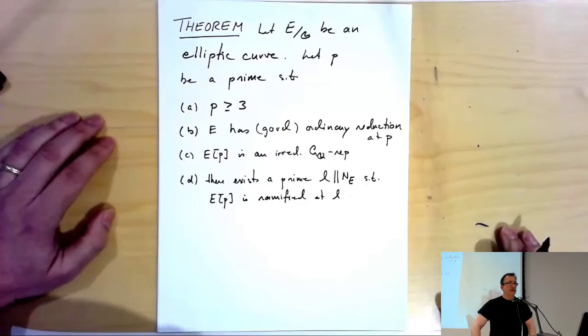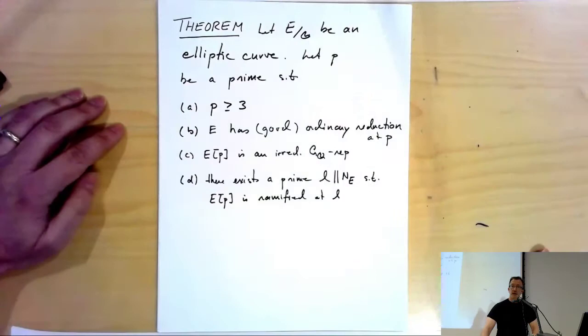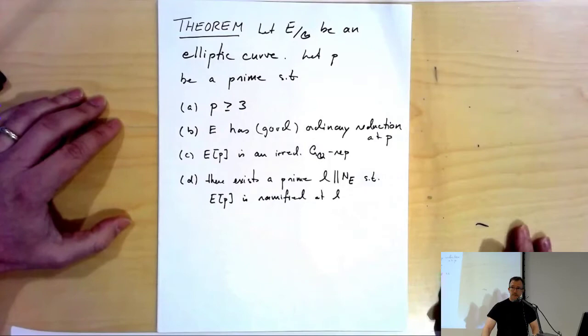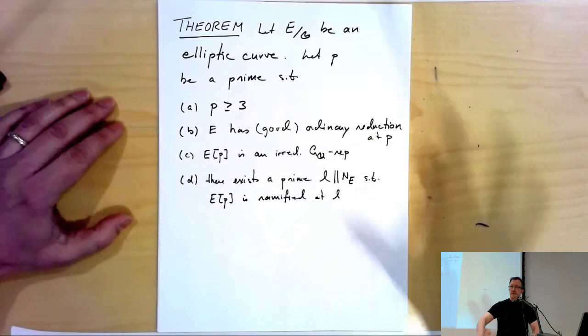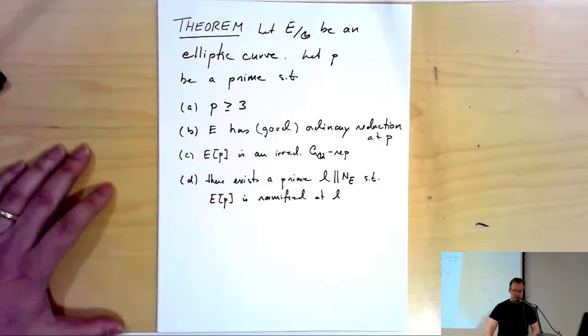This can be stated in a very clean way in terms of a minimal model for the elliptic curve at the prime l. If I take the minimal discriminant and look at the ord_l — the power of l that divides that discriminant — I need that to not be divisible by p. So the power of l dividing the minimal discriminant shouldn't be divisible by p. We'll stick to the Galois formulation.